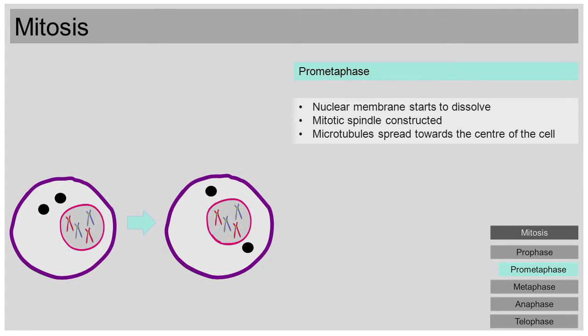During prometaphase, the nuclear membrane starts to dissolve. What is more, the mitotic spindle is constructed. The mitotic spindle is made up of the two centrosomes and spindle fibers, which are also called microtubules. The microtubules spread from the centrosomes towards the middle of the cell.